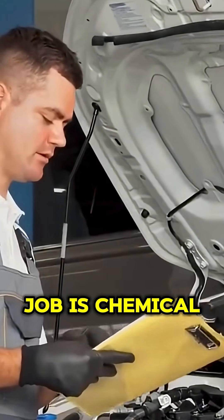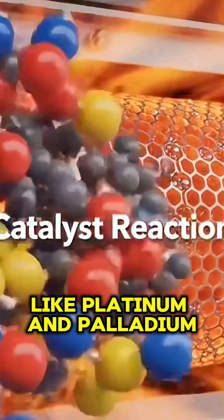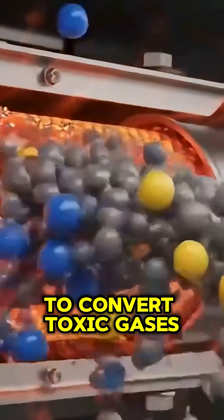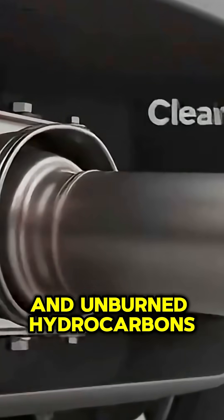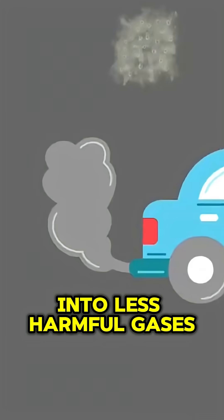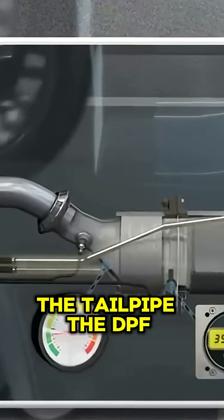The catalytic converter's job is chemical. It uses precious metals like platinum and palladium to convert toxic gases, such as carbon monoxide, nitrogen oxides, and unburned hydrocarbons, into less harmful gases like carbon dioxide and water vapor before they exit the tailpipe.